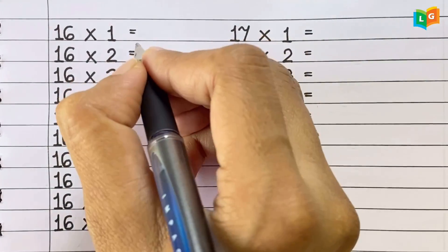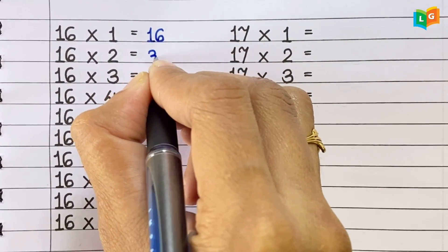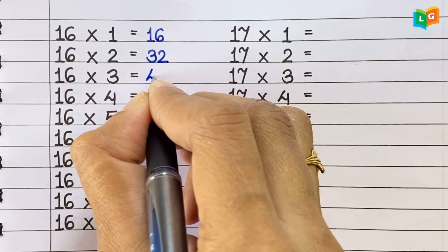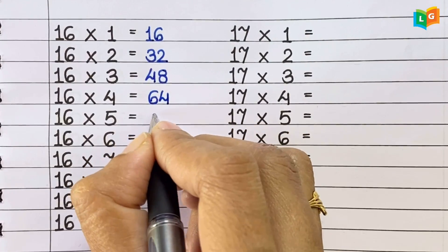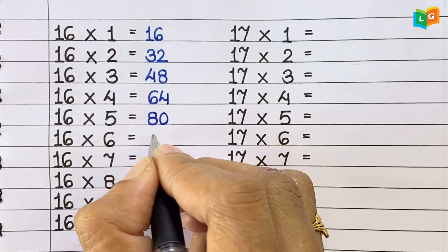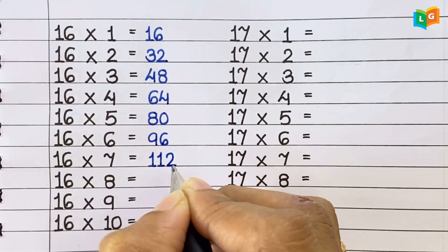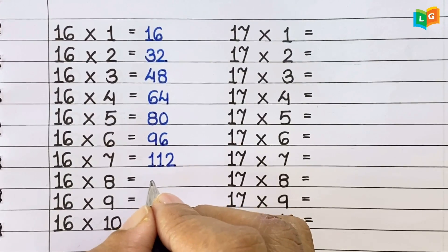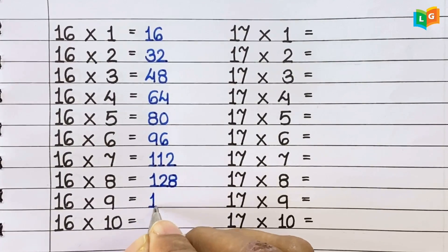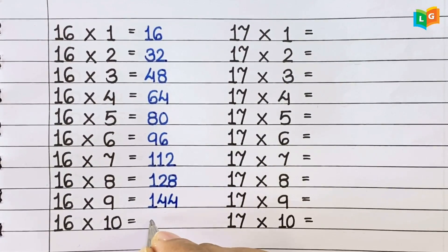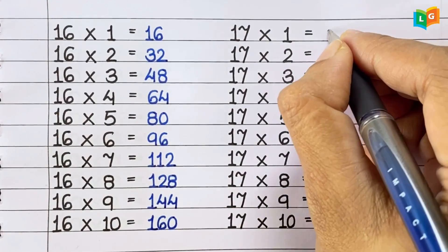Now let's see table of 16. 16 1s are 16, 16 2s are 32, 16 3s are 48, 16 4s are 64, 16 5s are 80, 16 6s are 96, 16 7s are 112, 16 8s are 128, 16 9s are 144, 16 10s are 160.